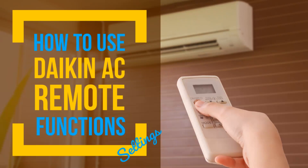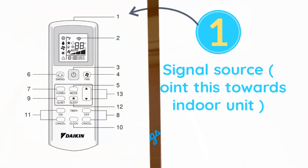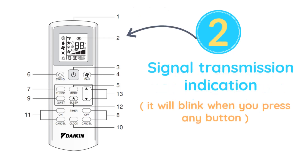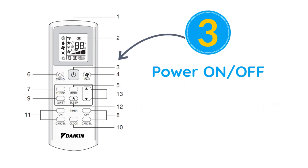In this video, I will explain Daikin AC remote functions, signs, symbols and settings in detail. Here is how to use the Daikin Air Conditioner remote. First, plug in electricity to the Daikin Air Conditioner, then turn on the Daikin AC remote using the power on/off button.